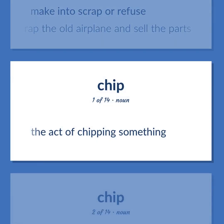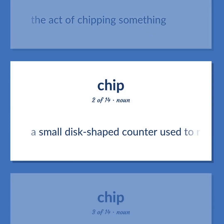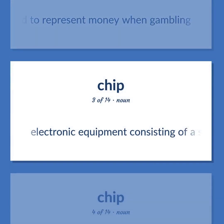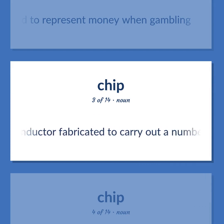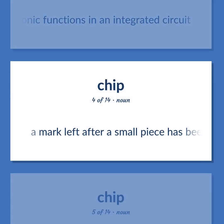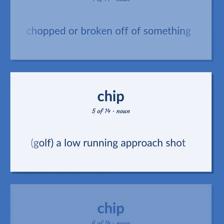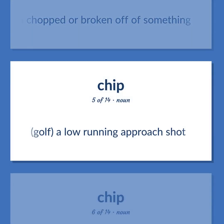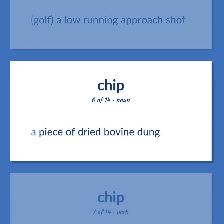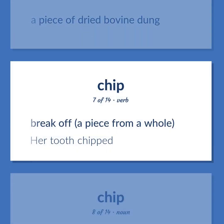Chip: The act of chipping something. A small disc-shaped counter used to represent money when gambling. Electronic equipment consisting of a small crystal of a silicon semiconductor fabricated to carry out a number of electronic functions in an integrated circuit. A mark left after a small piece has been chopped or broken off of something. Golf: A low running approach shot. A piece of dried bovine dung. Break off a piece from a whole — her tooth chipped.